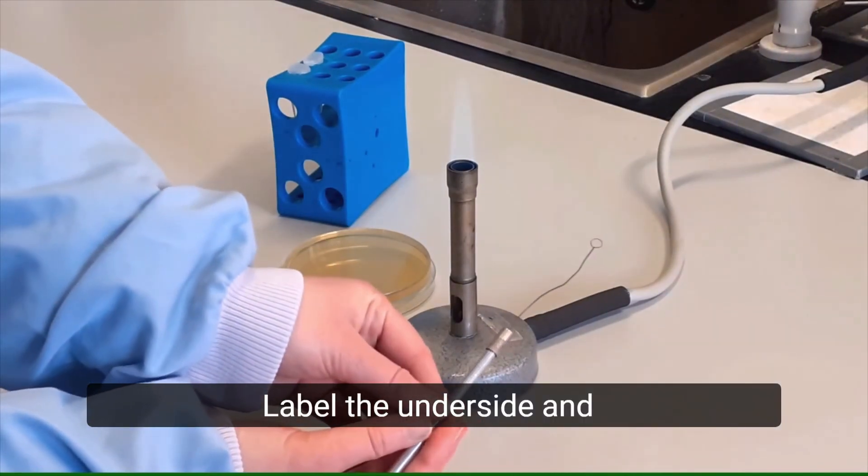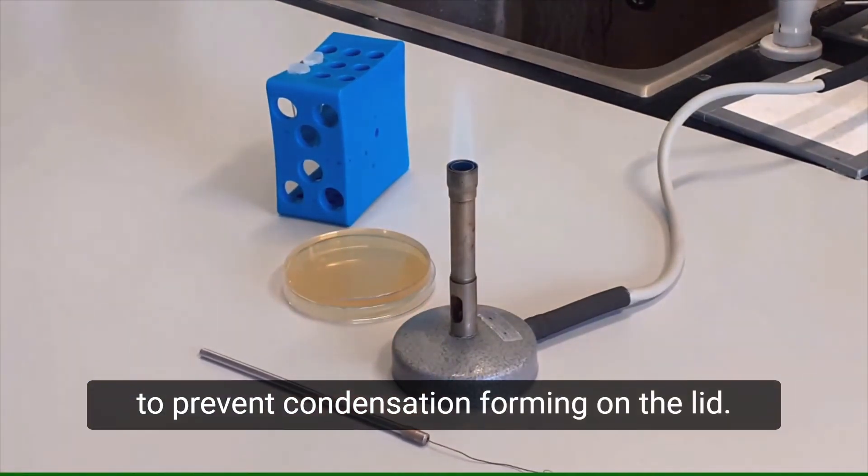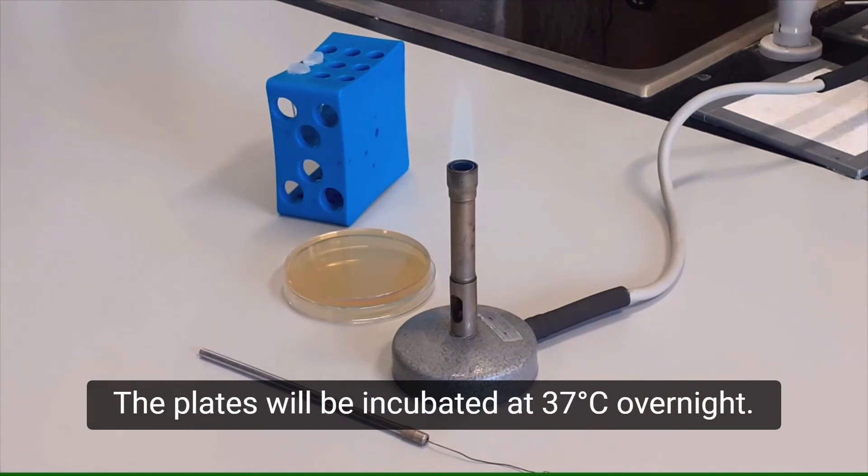Label the underside and keep the plate upside down to prevent condensation forming on the lid. The plates will be incubated at 37 degrees overnight.